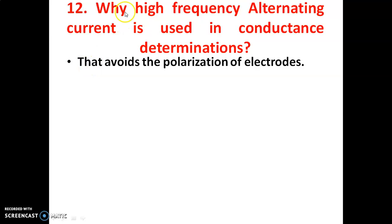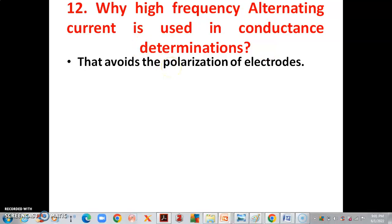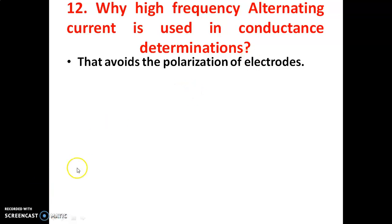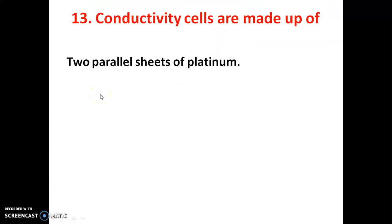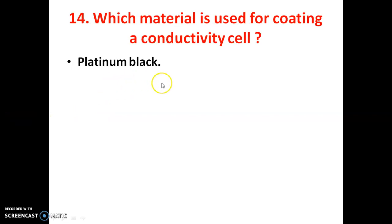Twelfth question: Why is high-frequency alternating current (AC) used in conductance determination? To avoid polarization of the electrodes, we use AC current, not DC current. Additionally, conductivity cells are made up of two parallel sheets of platinum, coated with platinum black.